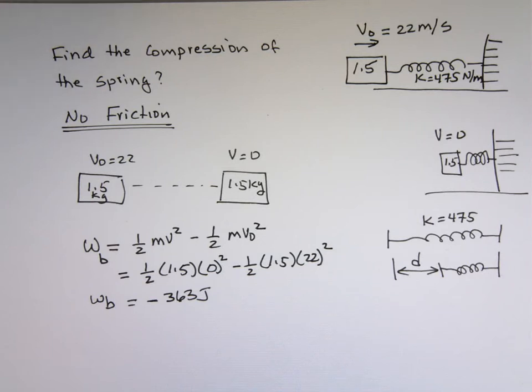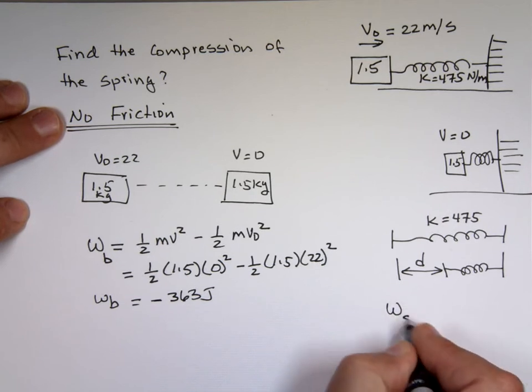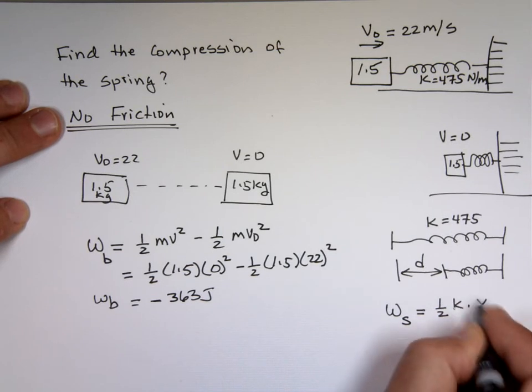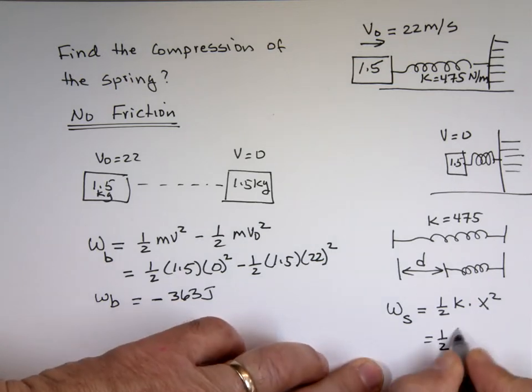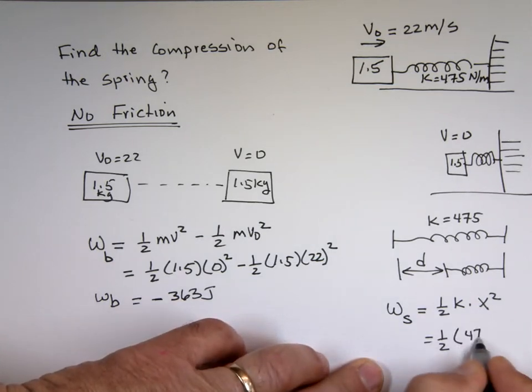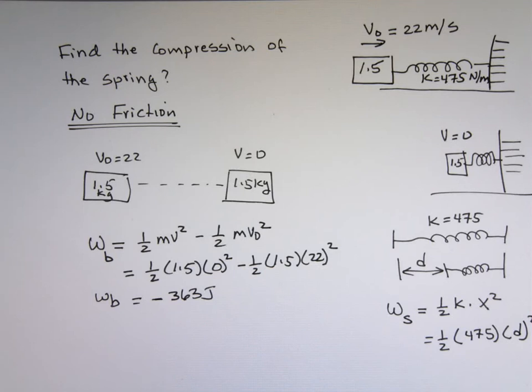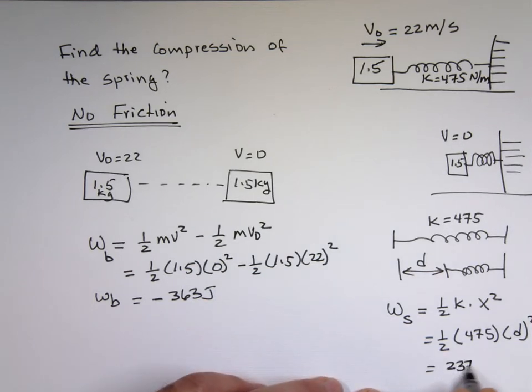Well, why would you slow down? What makes you slow down? Isn't that the spring pushing back on you? So what is the amount of energy or work done by the spring? The spring is one-half k times x squared. So it's one-half k, which is 475, and x is the distance that is compressed, which is d squared. And that's equal to 237.5 d squared.